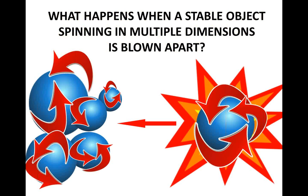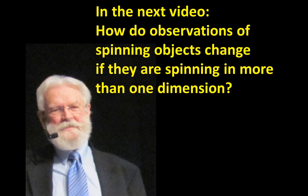—an integrated stable object spinning in multiple dimensions is blown apart. So in the next video, we'll find out how observations of spinning objects change if they are spinning in more than one dimension. So please join me in the next video. Thank you.